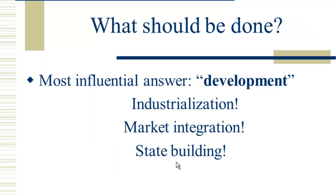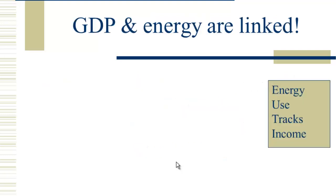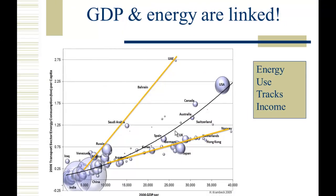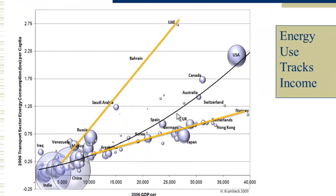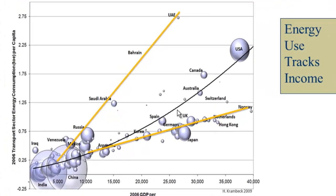So what's to be done about this? The answer for the last 70 years has been development — which means industrialization, integration into the market system and a money economy, and strong stable states through building strong militaries around the world. And there's certainly a link here: it's not just money, but when we're talking about industrialism as the answer, there's a link between GDP — linked to all those good things — and energy.